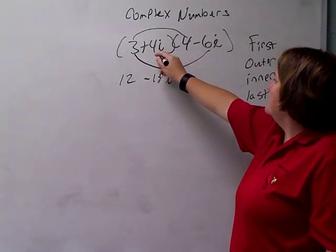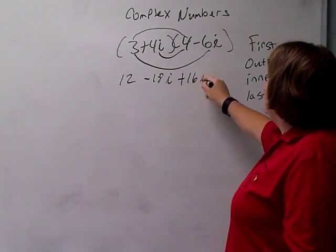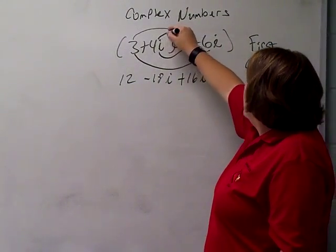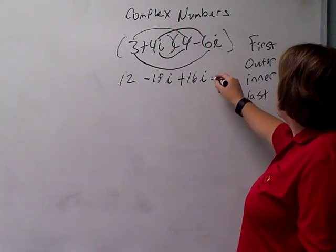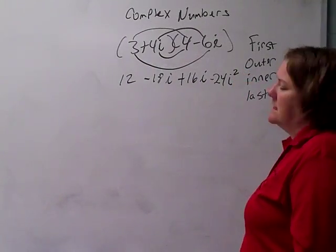Inner, the middle two. 4i times 4 is 16i. And last, 4i times negative 6i is negative 24. That's i squared, i times i.